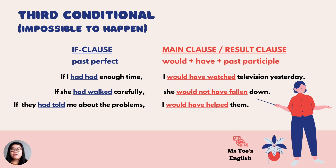In terms of grammar for third conditional, for the if clause we use past perfect. Past perfect tense is formed by had plus past participle. So you can see the examples: had had, had walked, had told. Past participle is the third column of the verb table. And for main clause and result clause, we use would have plus past participle — would have watched, would not have fallen, would have helped.